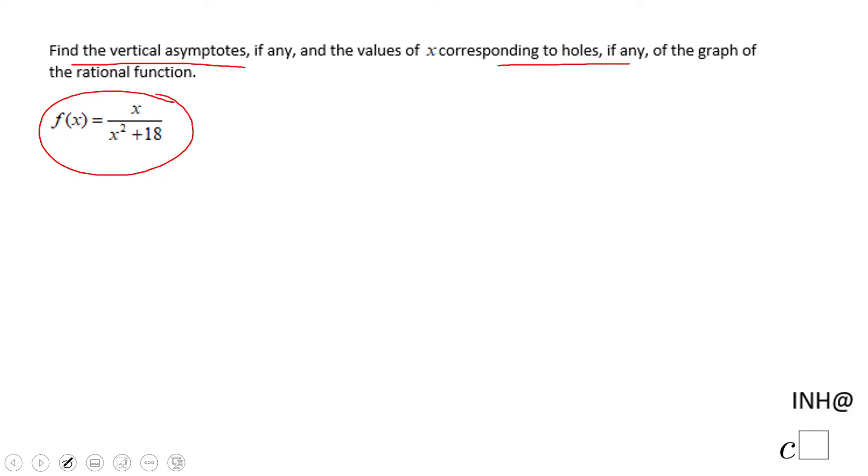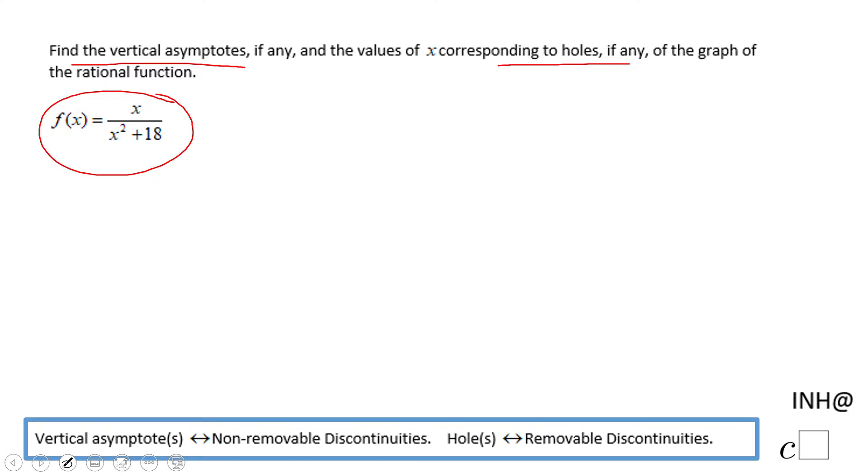For finding the vertical asymptotes or the holes, we're going to look for what we call discontinuity, removable or non-removable. For finding this discontinuity, you need to take the denominator and make it equal to zero.